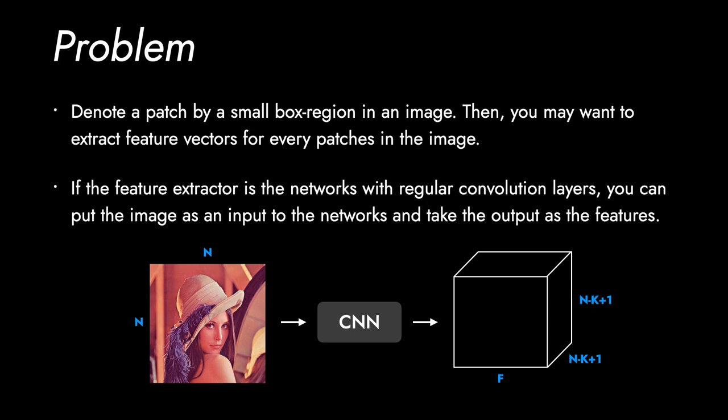If the feature extractor consists of regular convolution layers, you can put the whole images as an input to the network, and take the output as N minus K plus one by N minus K plus one features if you do not use padding for the input.